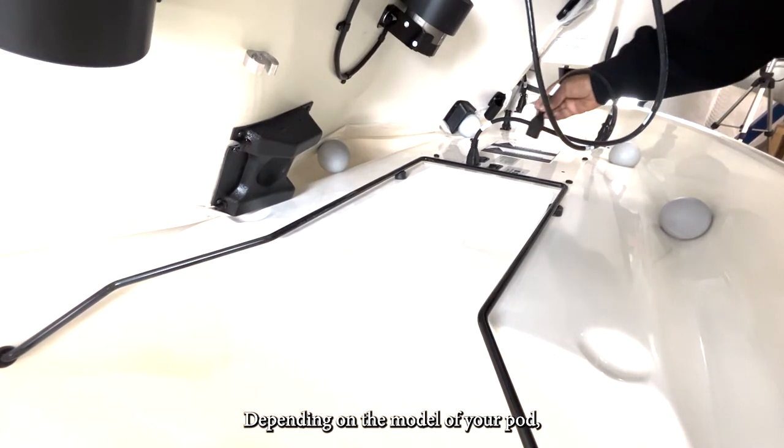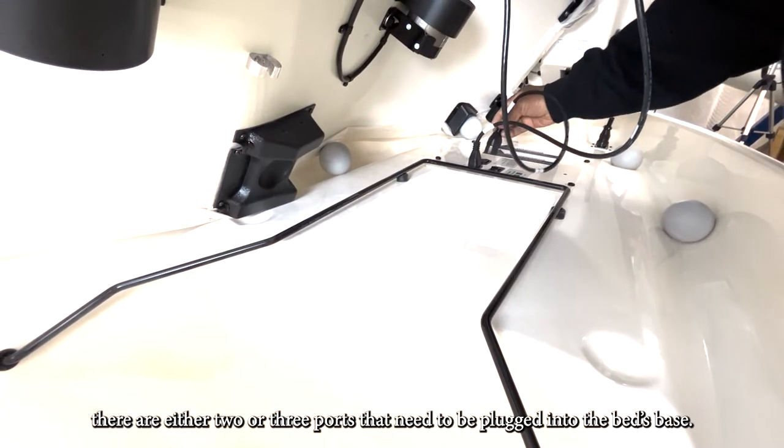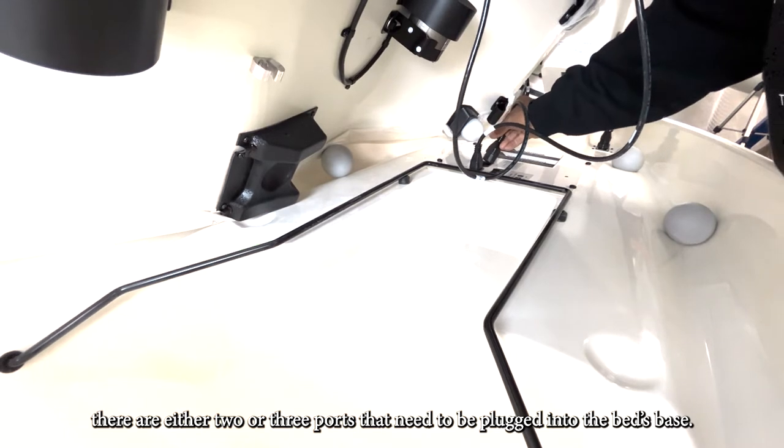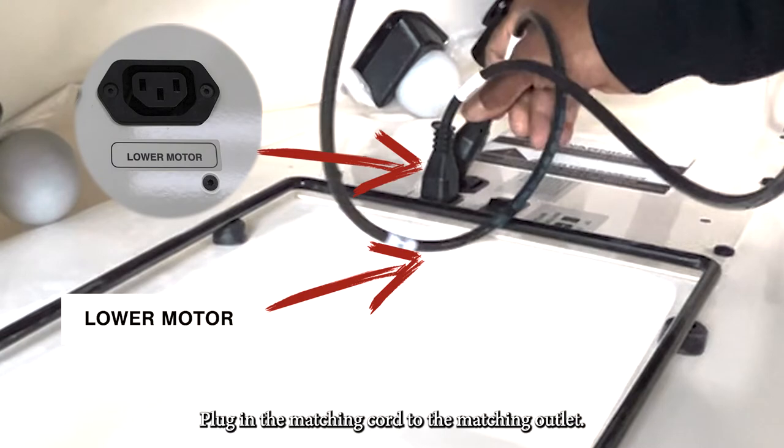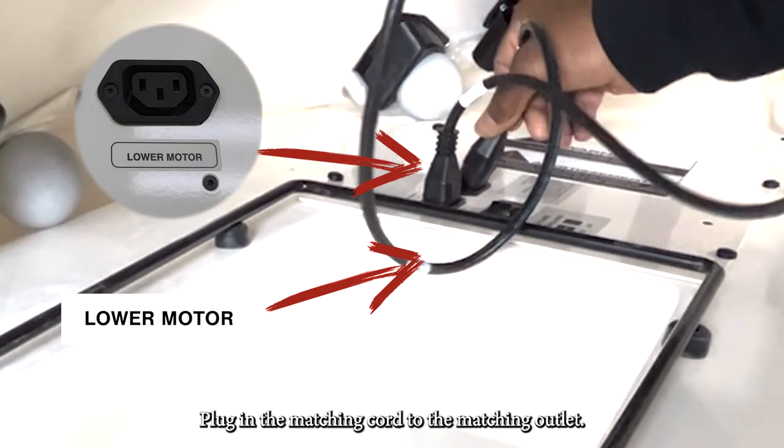Depending on the model of your pod, there are either two or three cords that need to be plugged into the bed space. Both the outlet and the cords are labeled. Plug in the matching cord to the matching outlet.